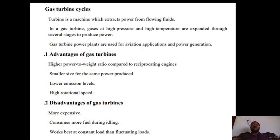For power generation, gas turbines are used in steam power plants, nuclear power plants, diesel power plants, and naphtha-based power plants. Steam turbines are also used for power generation. For example, in Karnataka, the Raichur Thermal Power Station and Bellari Power Station are supercritical thermal power stations that use steam power plants.